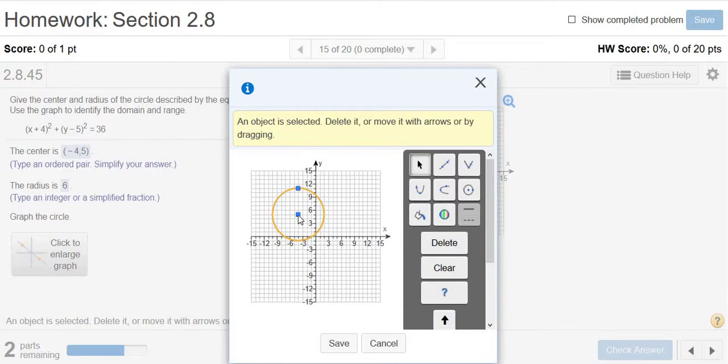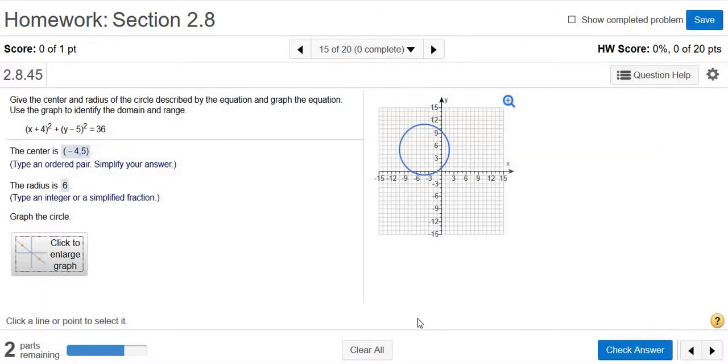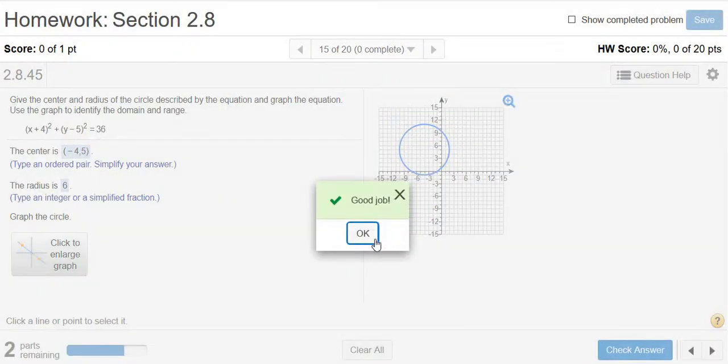So I went from 5 up to 11, because 5 plus 6 is 11. I just added 6 to the Y coordinate, right? So we're directly above it by 6 units. Click save. And let's try check answer. Yep, looks good.